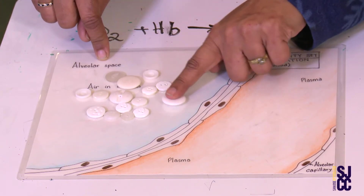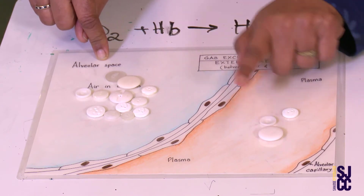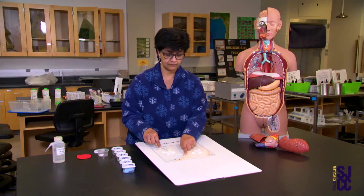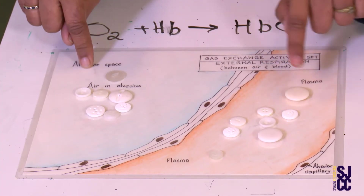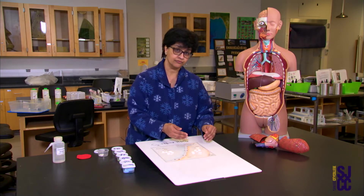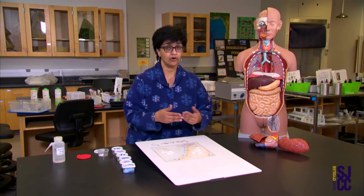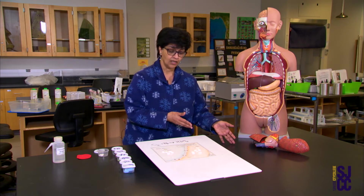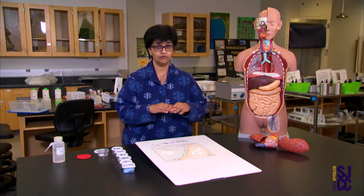The oxygen keeps moving into the blood until there is equilibrium. Now I have 8 here and 8 here, so no more oxygen will move. But my body needs a lot more oxygen — the more oxygen I have, the more cellular respiration I can do. So here we have arrived at equilibrium and movement will stop.